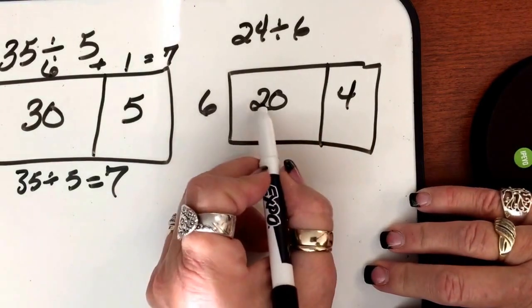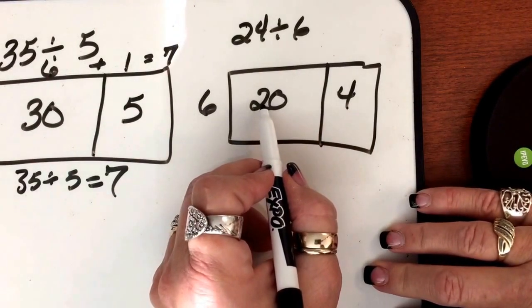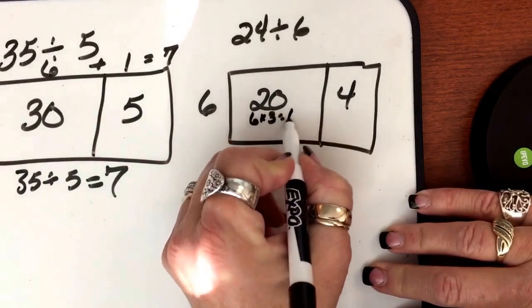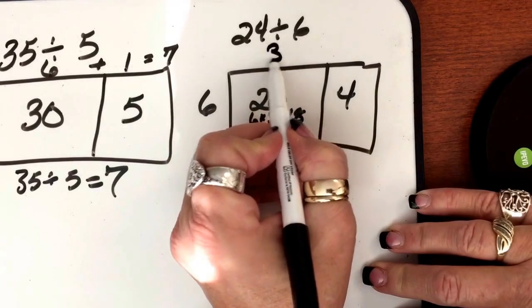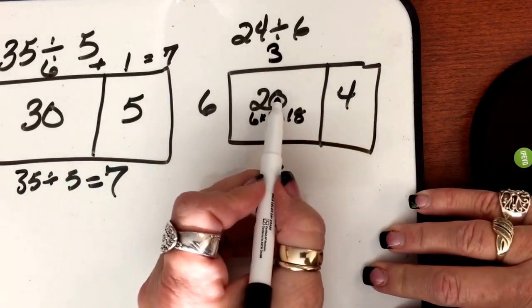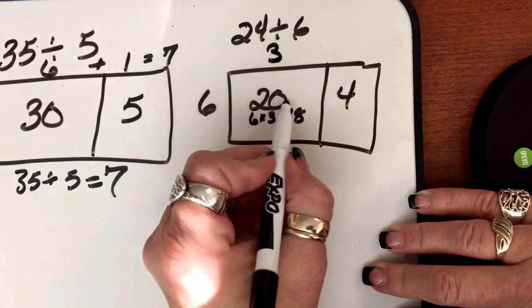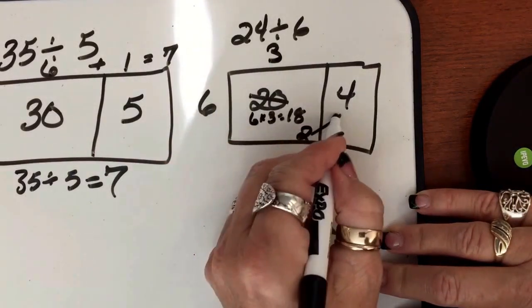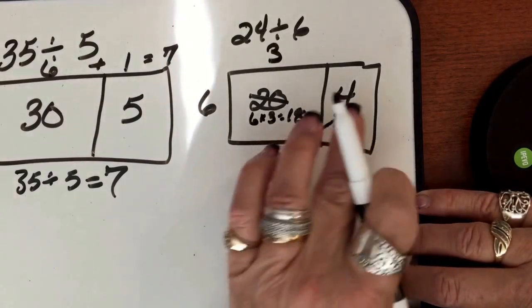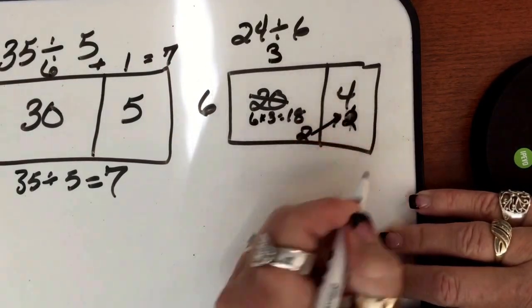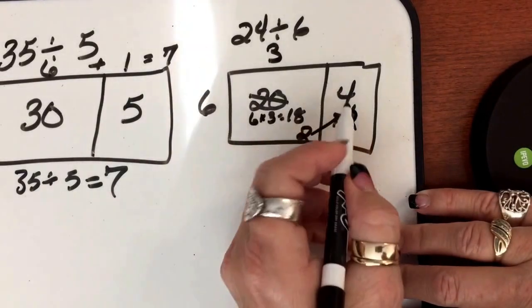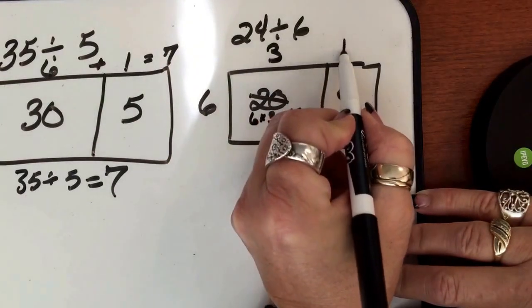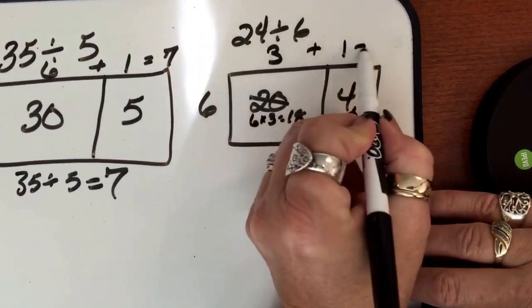How many times will 6 go into 20? Oh well, let's see, 6 times 3 equals 18. So we're going to put a 3 up here. And we've used how much? Well, we still have 2 that we haven't used. So we're going to put that 2 over here with this 4. We're going to put a 2 over there with a 4. So now we have 6 divided. How many times will 6 go into 6? It'll go in there one time. So it equals 4.